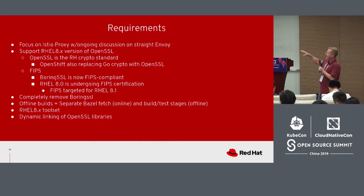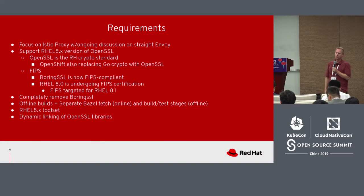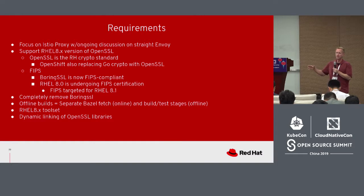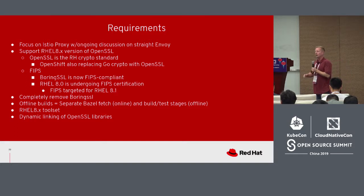These are Red Hat's priorities. Our current focus right now is on Istio Proxy. What we need to do as Red Hat is support the RHEL version for FIPS and for other reasons. We need to support OpenSSL because that's the component that we have our expertise in. We've got contributors there — that's what we're comfortable supporting. Going and supporting a whole other crypto standard opens up a whole ton of risk for us as a company.